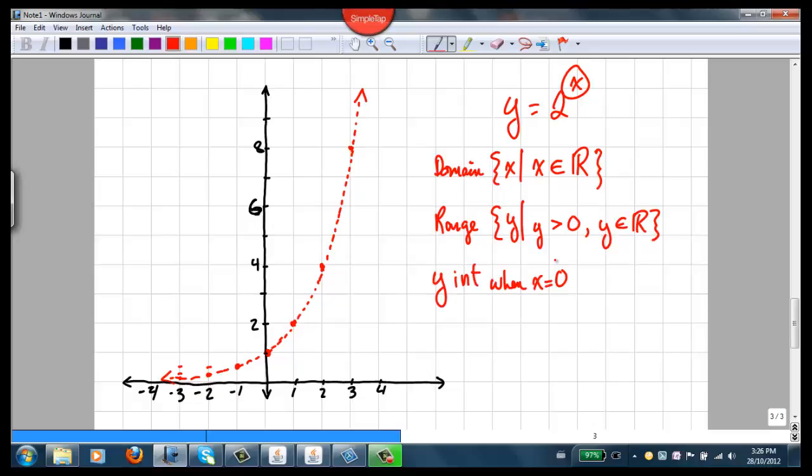The y-intercept happens when x equals 0. So in this case we can see that when x is 0, y is 1. And we saw that before. If we look for an x-intercept, well, since it never crosses the x-axis, it's not applicable. There is no x-intercept.